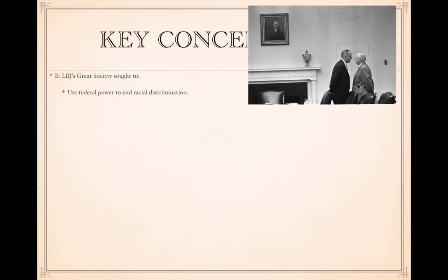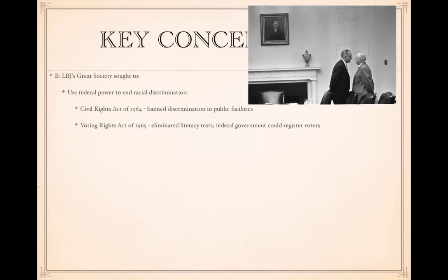LBJ used his imposing physical stature — about 6'3" or 6'4" — to intimidate people in what's known as the 'Johnson treatment.' The Civil Rights Act of 1964 banned discrimination in public facilities. The Voting Rights Act of 1965 eliminated literacy tests and allowed the federal government to register voters in areas where minorities were not registered. The 24th Amendment eliminated poll taxes. Together, these finally brought the 15th Amendment's guarantee of suffrage — passed during Reconstruction — to fruition.